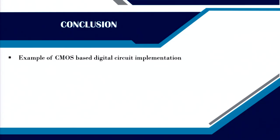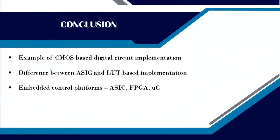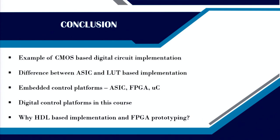In summary, we gave an example of CMOS based digital circuit implementation using an AND gate, and we saw that using ASIC it requires 6 transistors while using a lookup table it requires 40 transistors. We understood the difference between flexibility and hardware resource as well as power consumption. ASIC is very good for low power as well as specific hardware, but lookup table is good for flexible hardware. We discussed aspects of ASIC, FPGA, and microcontroller, and the digital control platforms used in this course, including why we use HDL based implementation and FPGA prototyping. I hope you got an idea about the various digital controller platforms. Thank you very much.